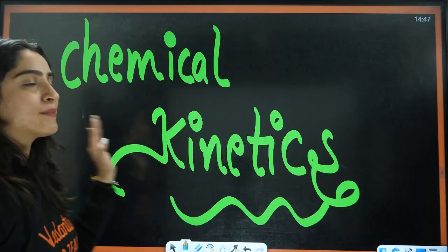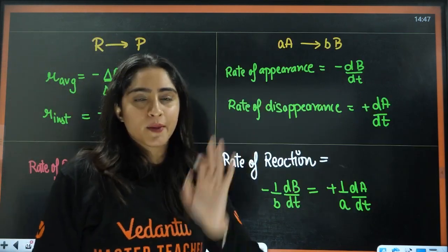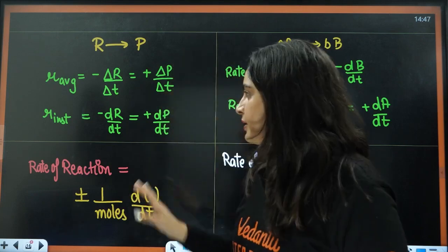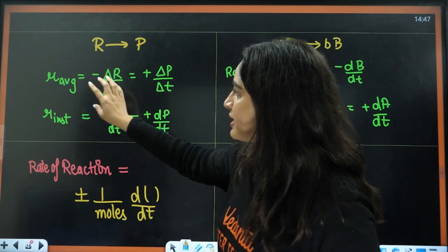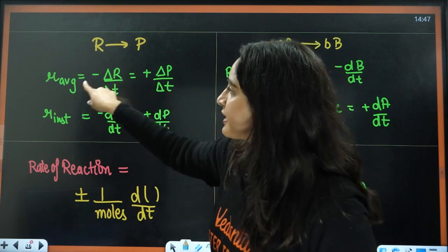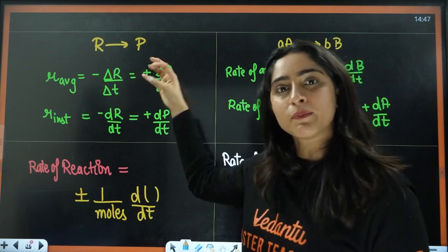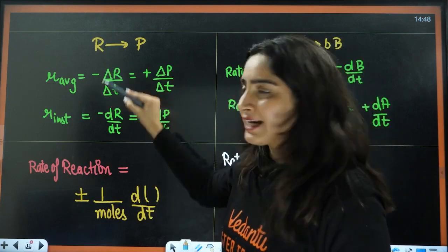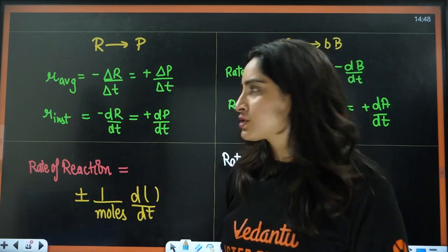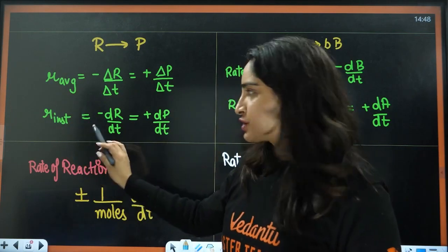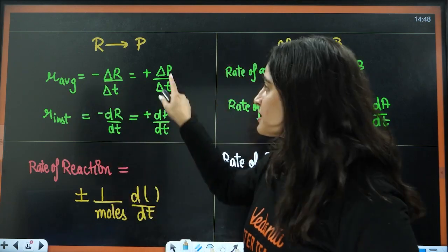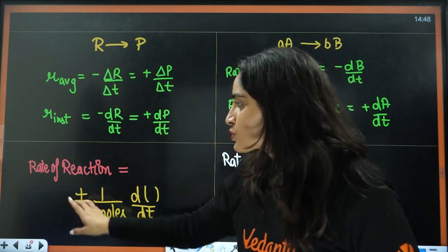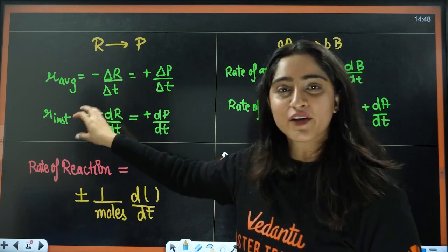Next we have chemical kinetics — the simplest chapter of physical chemistry. We have reactants and products. Here are two or three things students usually get confused about. This is the average rate — equals minus delta R by delta t for reactants, because the reactant is getting disappeared, so minus is used. The product is getting formed, so plus is used for that. Delta represents a large change, and D represents a very small change. So this is instantaneous rate — D R by D t. And this is delta R by delta t for the average rate.